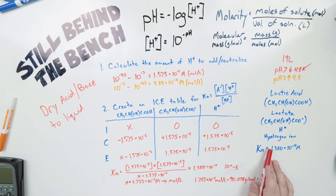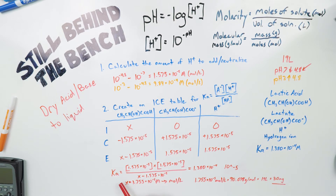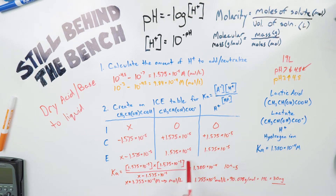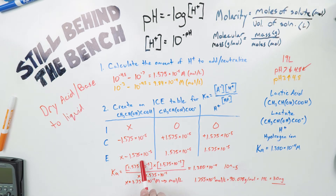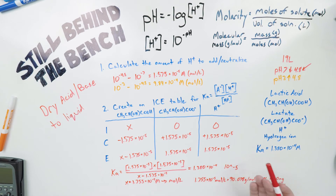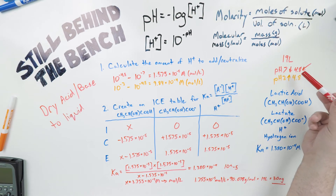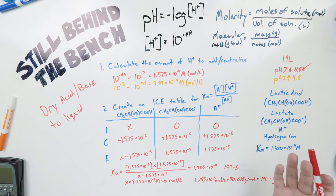Since we already know the Ka value for lactic acid, we can write out the Ka formula using the equilibrium values. Concentration of conjugate base times concentration of hydrogen ions, divided by concentration of the weak acid (x minus 1.575 × 10⁻⁵), equals the Ka. If you're not comfortable with the math, you can rewrite this equation in Wolfram Alpha and it will give you the x value. In this case, x equals 1.755 × 10⁻⁵ moles per liter of hydrogen ions — that will drop 1 liter from pH 7 to 4.8. But we have 19 liters, not 1.